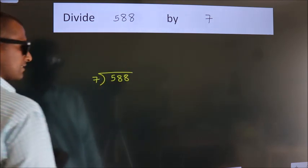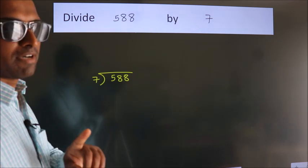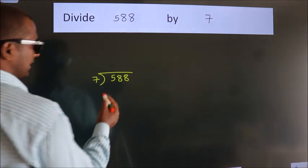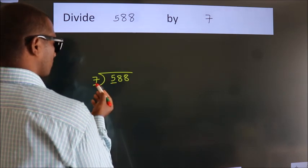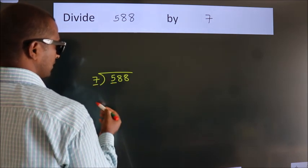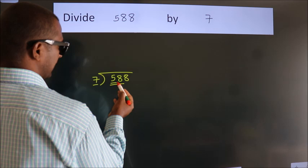This is your step 1. Next, here we have 5, here 7. 5 is smaller than 7, so we should take two numbers: 58.